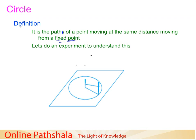Let's do an experiment to understand this. Take two small sticks — stick A and stick B — and tie a thread between them. Take stick A to a place with soft ground and dig it firmly into the ground. Then straighten the thread out, and keeping it straight, try to make a path around stick A such that the thread always remains straight. This is how you trace the path, as shown here.